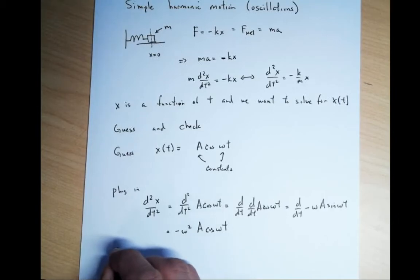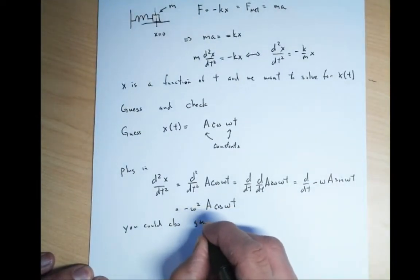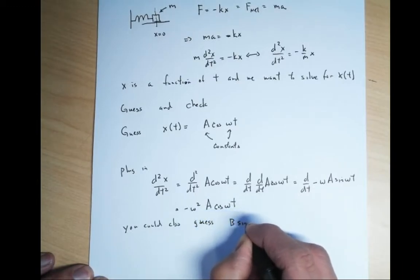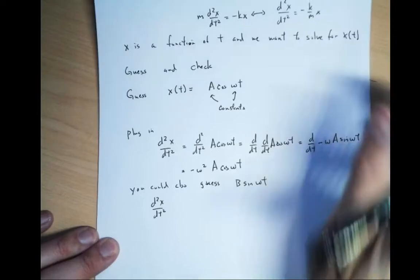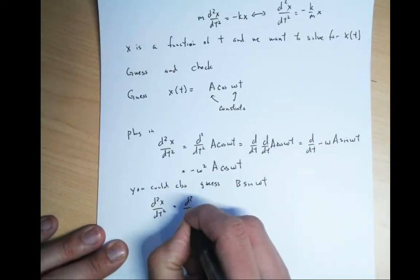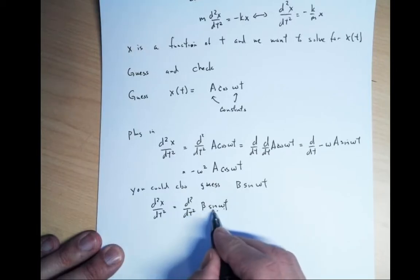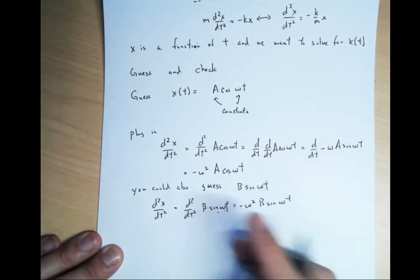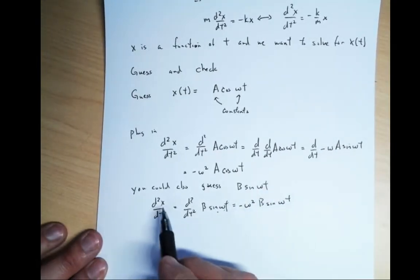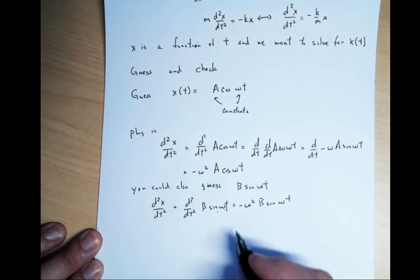You can also guess B sine omega t. In that case, d squared dt squared of B sine omega t: hit it once you get a cosine with one factor of omega, hit it again you get a minus sine with another factor of omega. So it becomes minus omega squared B sine omega t. Both guesses have the same structure — minus omega squared appears in both.